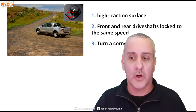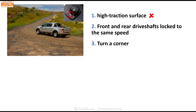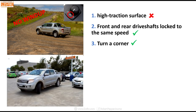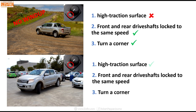Let's go through some examples. A Ford Ranger is a part-time four-wheel drive in four-wheel drive. Is it a high traction surface? No, it's a dirt road. Are the front and rear drive shafts locked? Yes. Is it turning a corner? Yes. Do we have wind-up? No — because only one of the three criteria is true; we need all three. Now here's that Ranger again, still in four-wheel drive, but on bitumen turning a corner — all three criteria are true, therefore we will get wind-up.